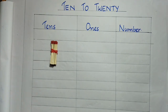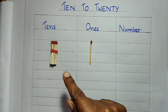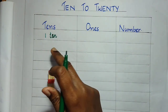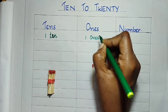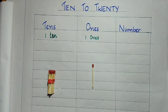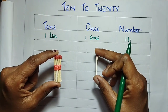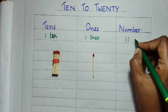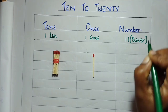Then, I would like to take one more math stick and place it in the 1s column. So, 10 plus 1 is 11. Very good. 1 ten and 1 one is 11. A bundle of 10 math sticks along with 1 math stick makes 11. So, 10 plus 1 is 11. How to write it in words? E-L-E-V-E-N. Very good, 11.